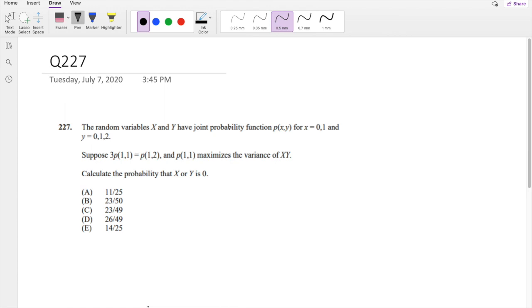Pause the video quick and try this problem yourself. Okay, I assume you already attempted it. Let's just dive right in. The random variables X and Y have a joint probability function. So I'm going to make a little chart here. X can take on the value 0, 1. Y can take on the value 0, 1, and 2.